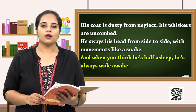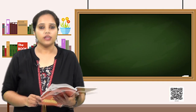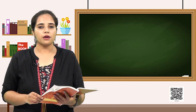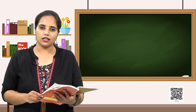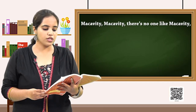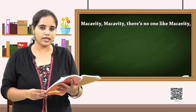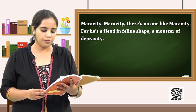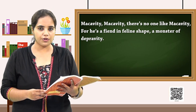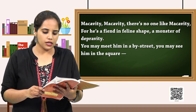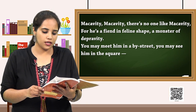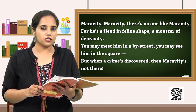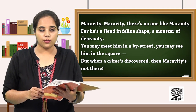We have now come to the last part of the poem. Let us read the last stanza. Remember to read aloud with me. 'Macavity, Macavity, there is no one like Macavity. For he is a fiend in feline shape, a monster of depravity. You may meet him in a by-street, you may see him in the square. But when a crime is discovered, then Macavity is not there.'